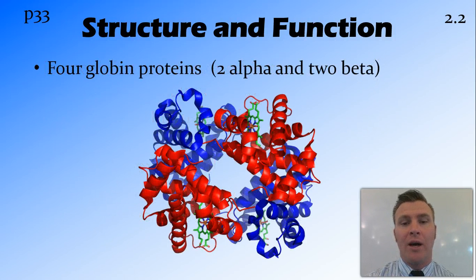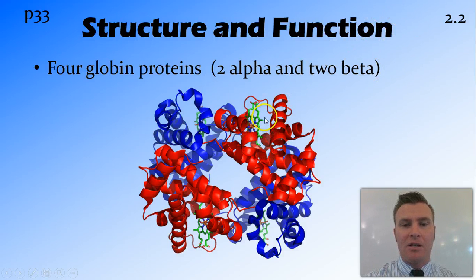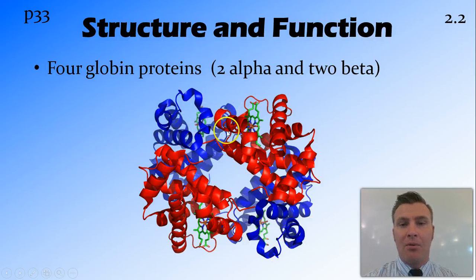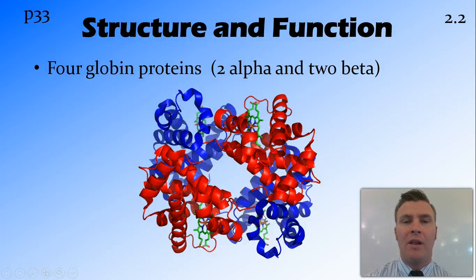Around these four hemes, we have four globin proteins. So this is the heme here — the green one — and we have our four hemes, and then we have our four globins around that. These are proteins, and we have two alpha and two beta on either side, which just refers to the direction of the twist of the protein.